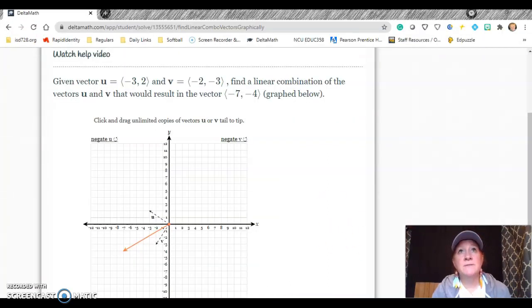So this is a little bit different. What I have to do is I have the vector u, which is negative 3,2. So that's this one right here. And v is negative 2, negative 3. So that's this one right here. So what I have to do is figure out, what do I have to do to get this vector. See this one right here? This is what I want. So I just have to put them together to figure it out. And this is doing it graphically. The next one is just figuring out by hand.